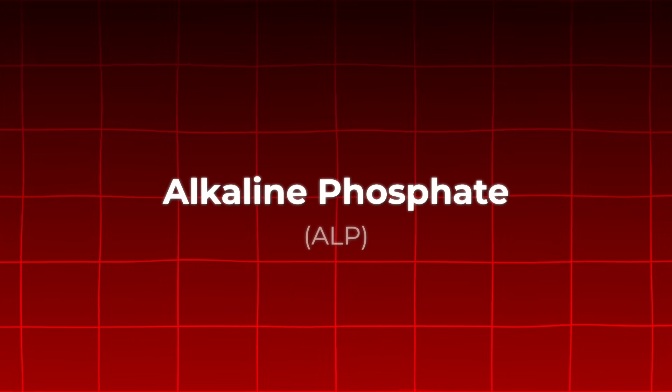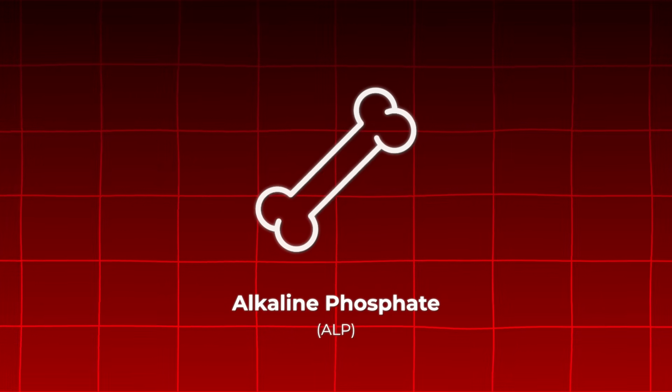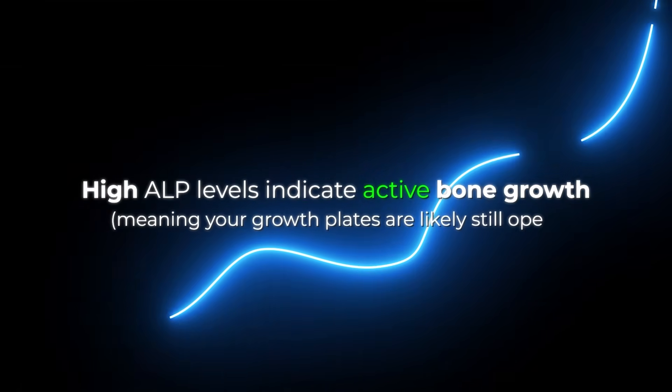Alkaline phosphate, on the other hand, also known as ALP, is an enzyme involved in bone formation. High ALP levels indicate active bone growth, meaning your growth plates are likely still open.